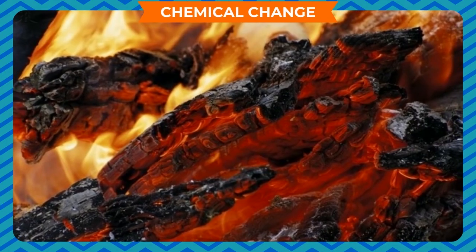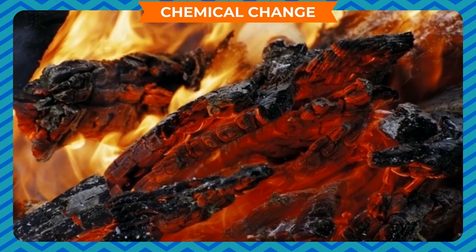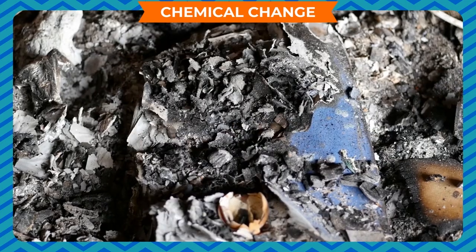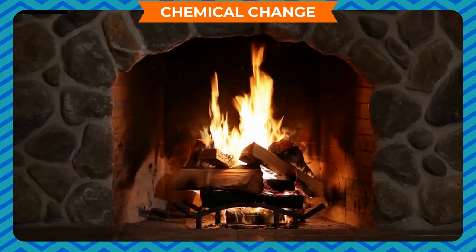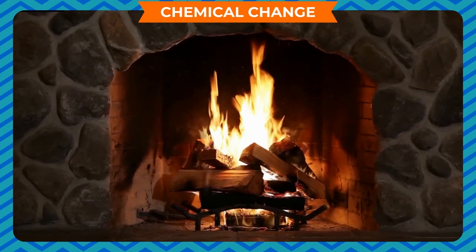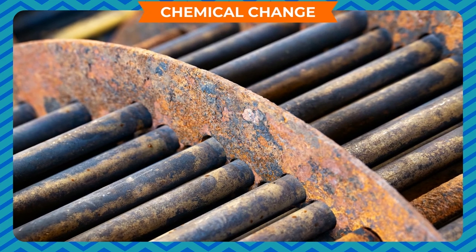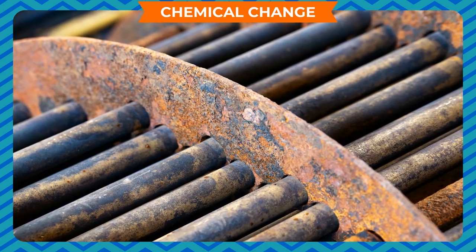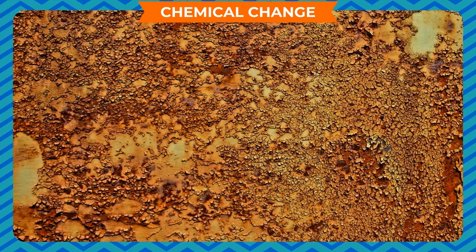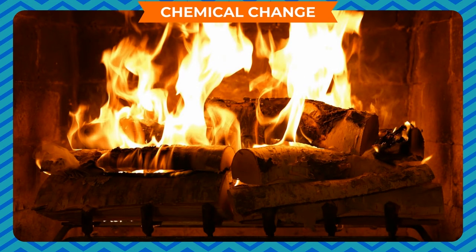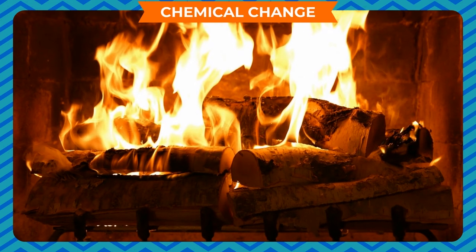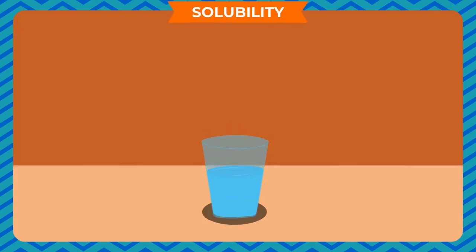A chemical change is any change in matter that forms one or more new substances. This change is not reversible — it is permanent. For example, rusting of iron in open atmosphere is a chemical change because we cannot get the same iron back. Production of bakery products and burning of wood are also chemical changes.